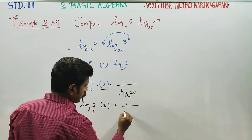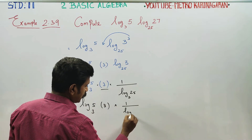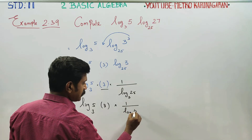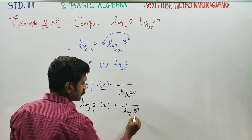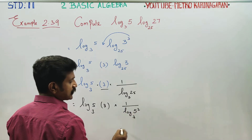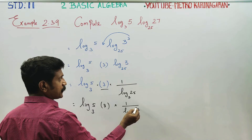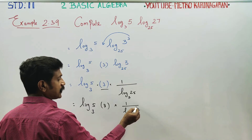Log 1 by log 25 can be written as 5 square. So we have 5 square to the base 3. Applying the power rule.